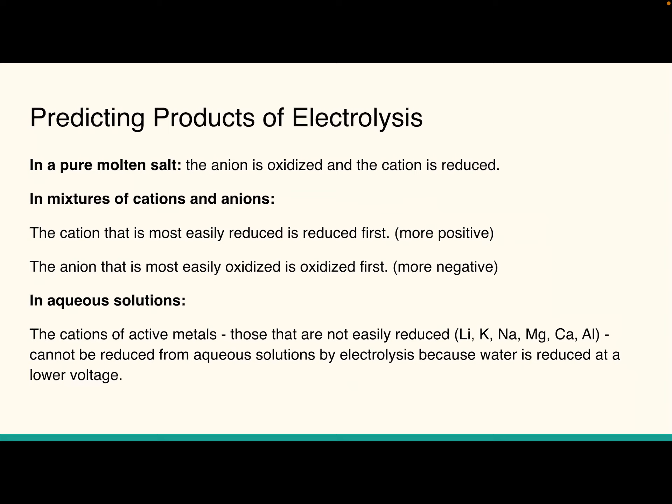In predicting products of electrolysis, there's a couple things to remember. If you have a molten salt, remember salts won't conduct electricity if they're in solid form. We have to dissolve them, but another way to do that is to melt them down. So molten salts would also work that way because now the charged particles, the ions, can flow freely. In that case, the anion is oxidized, the cation is reduced. If you have a mixture of cations and anions, and you're trying to figure out what's going to happen, you just look at your little reduction potential chart, and the cation that is most easily reduced will be reduced first. The anion that's most easily oxidized will be oxidized first.